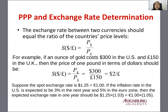For example, if an ounce of gold costs $300 in the United States and £150 in the United Kingdom, then the price of one pound in terms of dollars should be $300 divided by £150, which should be $2 per pound.